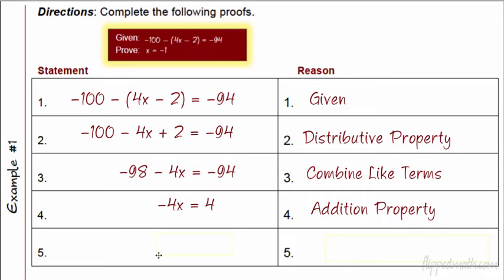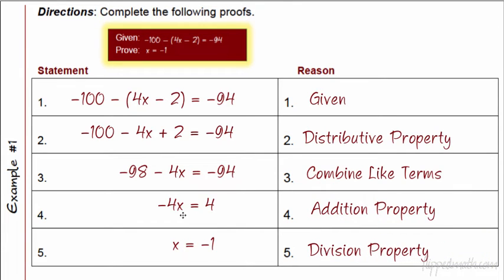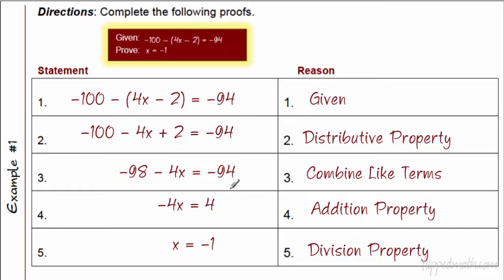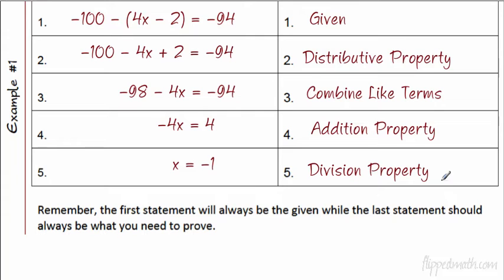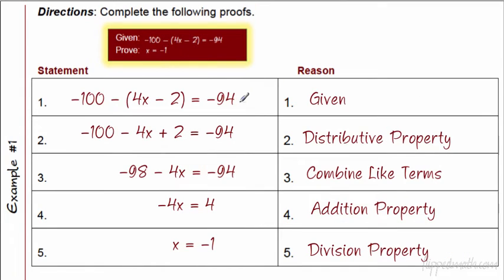Last step: I divide by negative 4, which gives us negative 1. That's the division property because I divide both sides of the equation by negative 4. And if you look, the prove statement up here is exactly the same as the very last statement, so we're all done. If I was feeling nerdy I'd write QED at the end of it, but you don't have to do that. Remember: the first statement will always be your given, and the last statement should be what you need to prove.